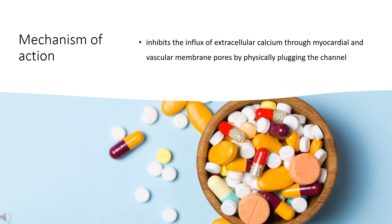Flunarizine inhibits the influx of extracellular calcium through myocardial and vascular membrane pores by physically plugging the channel. The decrease in intracellular calcium inhibits the contractile processes of smooth muscle cells, causing dilation of the coronary and systemic arteries, increased oxygen delivery to the myocardial tissue, decreased total peripheral resistance, decreased systemic blood pressure, and decreased afterload.